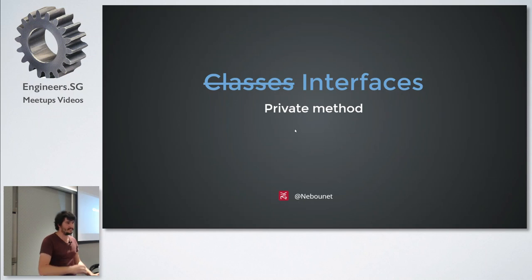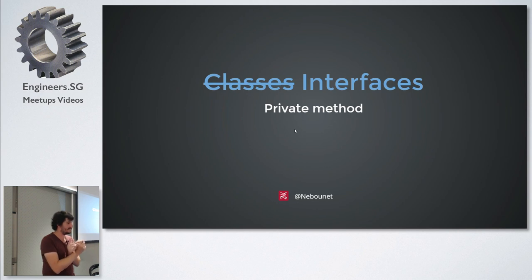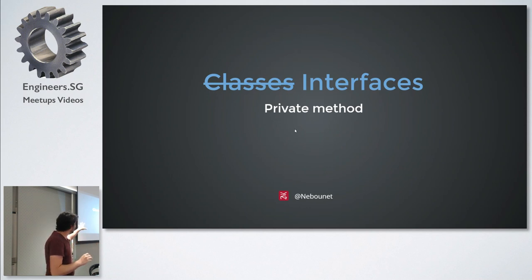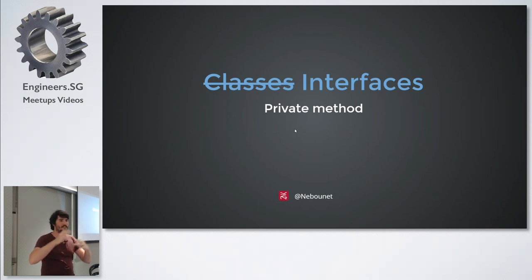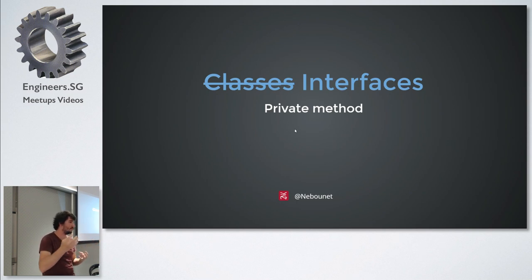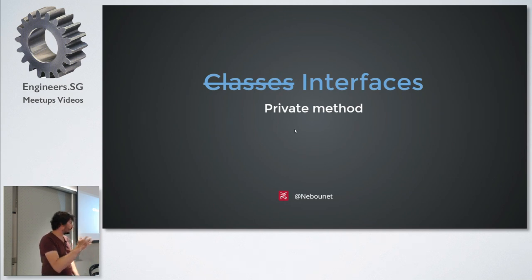Now with interfaces you have public, static, and now private methods. The reason is that since default methods were introduced, sometimes you needed to share code between different default methods in an interface but had no way to do so. That's why private methods were added — to share code between methods within an interface.